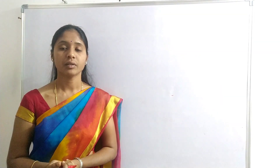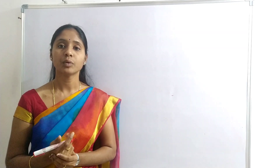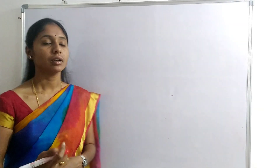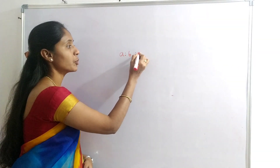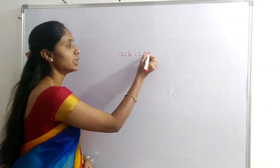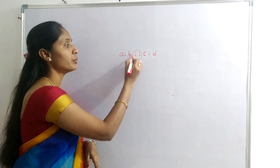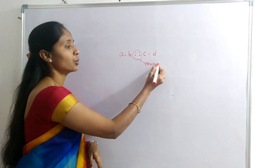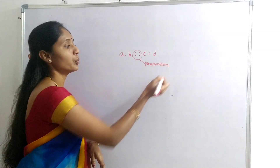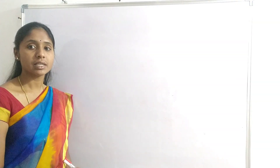Next, proportion. Proportion refers to the equality of two ratios. Suppose A is to B is proportional to C is to D — this is called proportion. Two ratios are in proportion. This is the introduction to ratio and proportion.